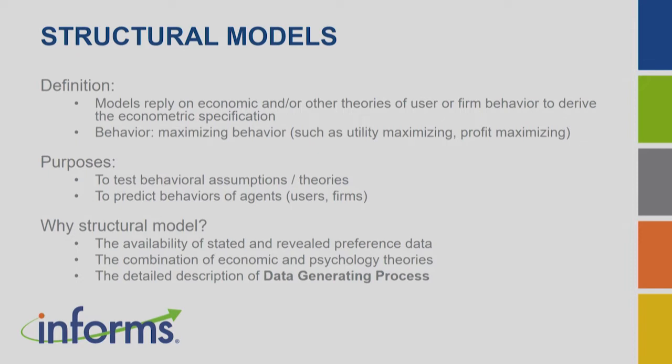Like any other empirical model, we use structural models to test theory and also to predict the behaviors of agents — the users or firms under study. You might ask why we need to use a structural model. We typically have richer data, and structural models often have a dynamic feature. If we have panel data with time series plus cross-sectional observations, we can certainly apply structural models. This also allows us to explicitly embed the underlying theory in the model specification.